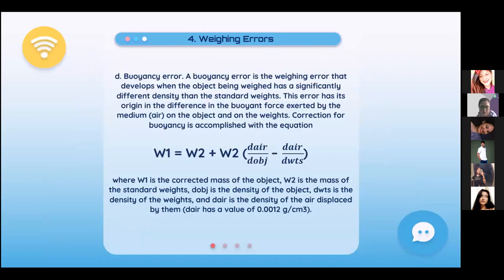Buoyancy error is the weighing error that develops when the object being weighed has a significantly different density than the standard weights, originating from the difference in buoyant force exerted by air on the object and on the weights. Correction for buoyancy uses the equation: W1 = W2 + W2 × (D_air / D_obj − D_air / D_wts), where W1 is the corrected mass, W2 is the mass indicated by standard weights, D_obj is the density of the object, D_wts is the density of the weights, and D_air is the density of air (0.0012 g/cm³).